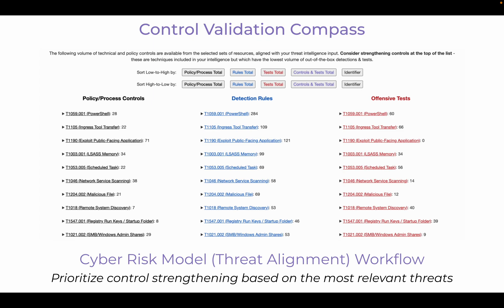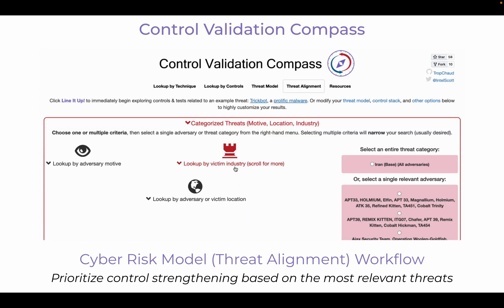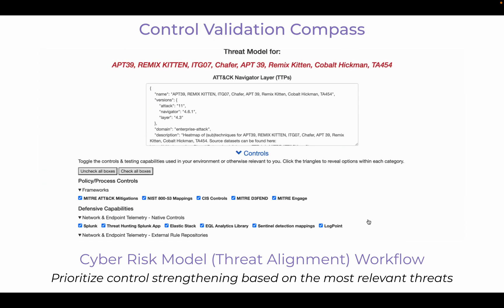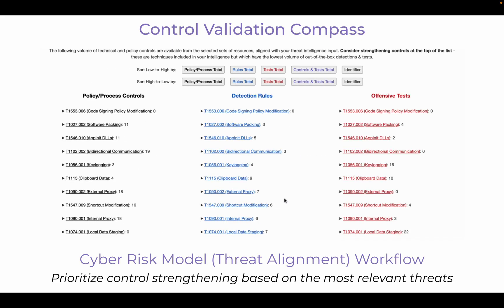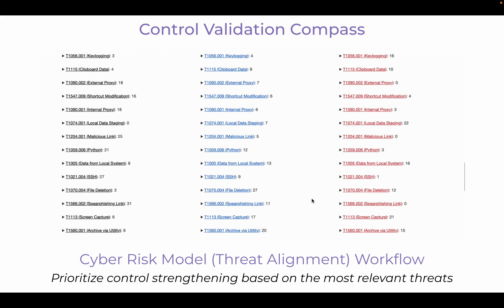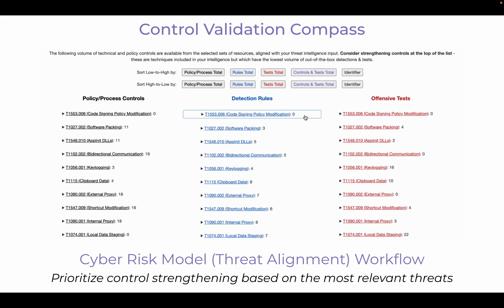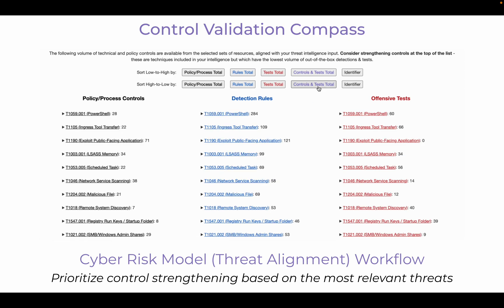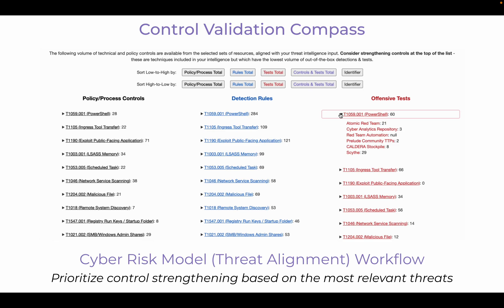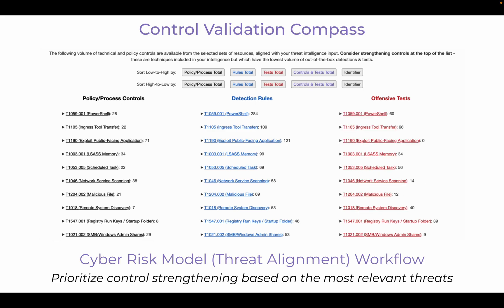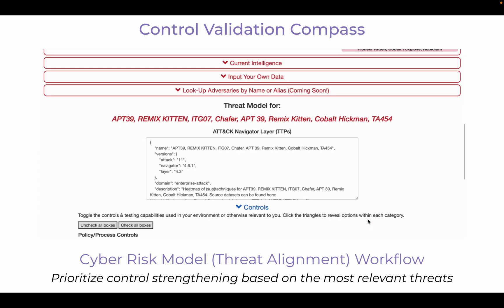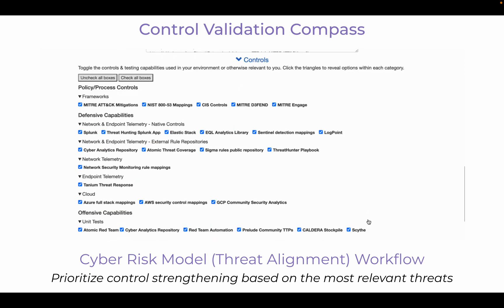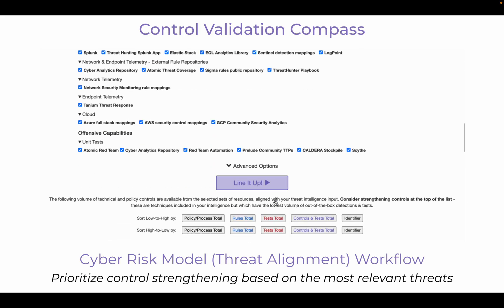Resort the list to reprioritize your unique TTP list based on which techniques have the most existing out-of-the-box controls, which have the least — useful for gap identification — or which appeared most often in your threat model. This prioritization informs which techniques security teams should focus on first: for example, implementing new pre-configured detections, developing custom rules to fill detection gaps, or deploying new red team tests to validate that detections are actually working as intended.